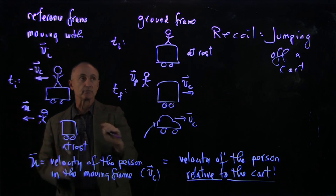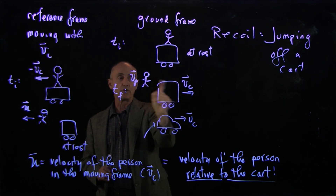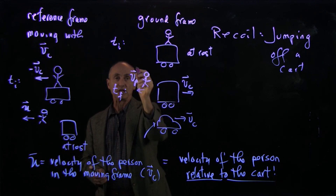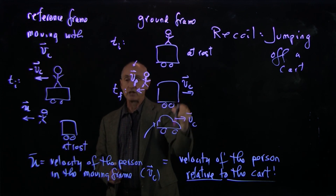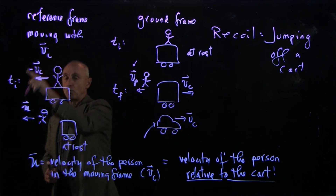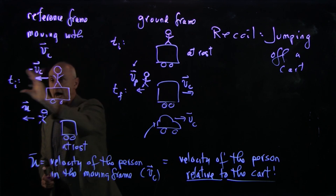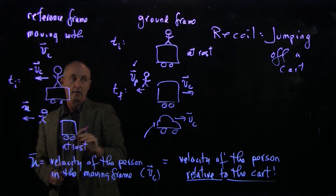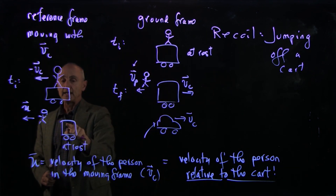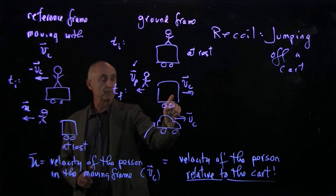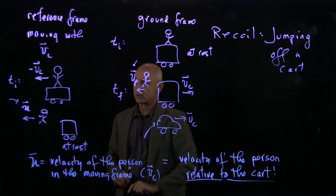These are our momentum diagrams for the ground frame, in which the person and cart start at rest: the person jumps off with velocity vp and the cart moves with vc. In the frame moving with the velocity of the cart, the cart and person are initially moving in the opposite direction. In the final state, the cart is at rest and the person jumps with velocity u relative to the cart.